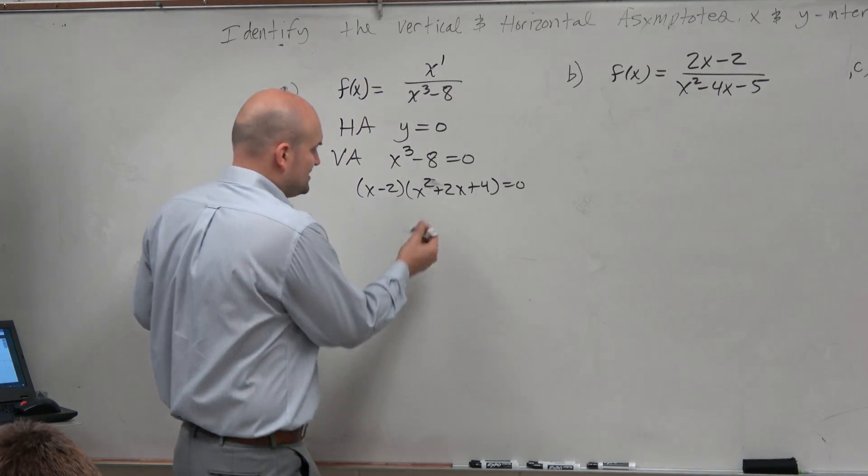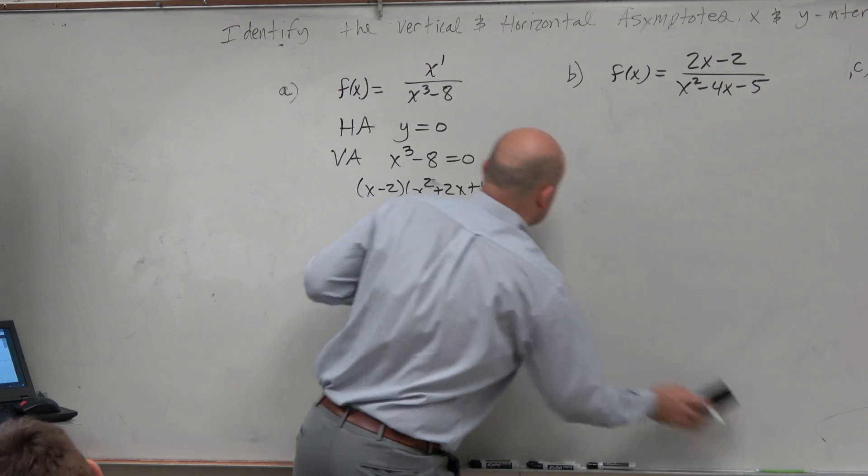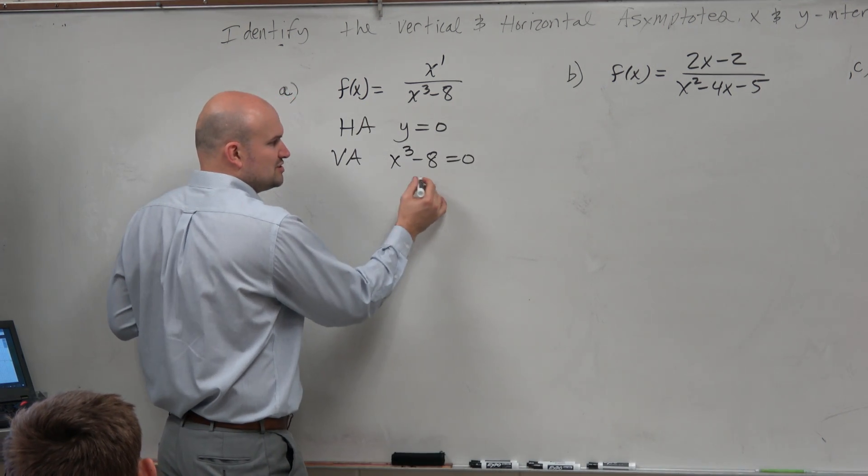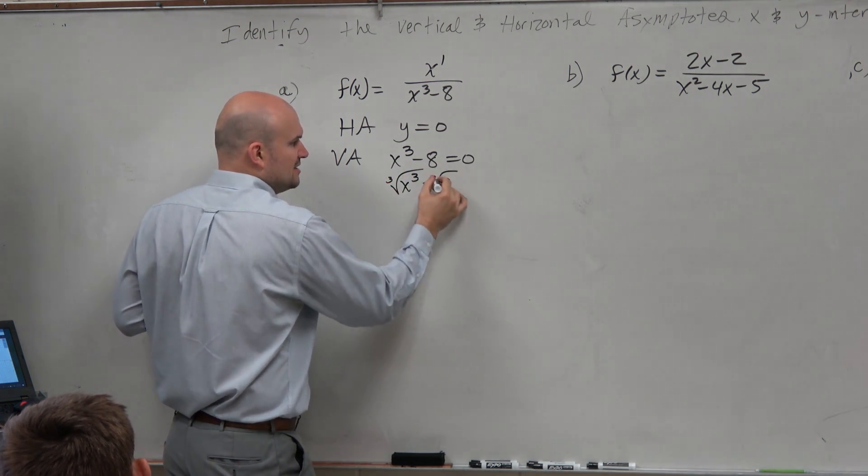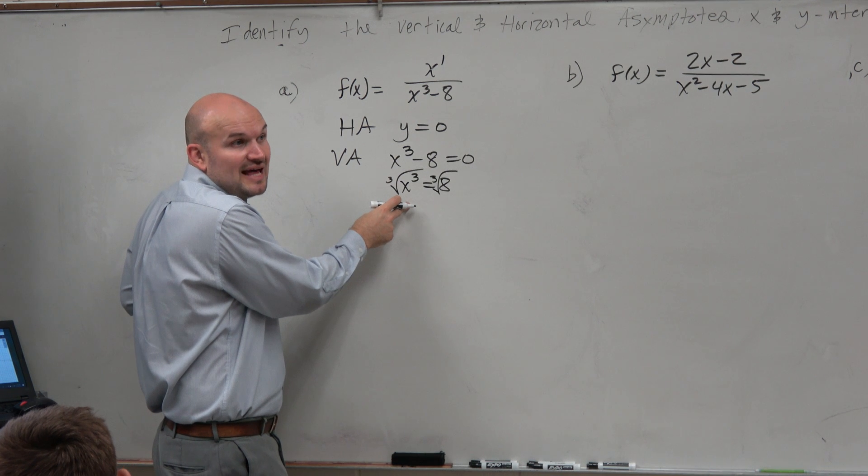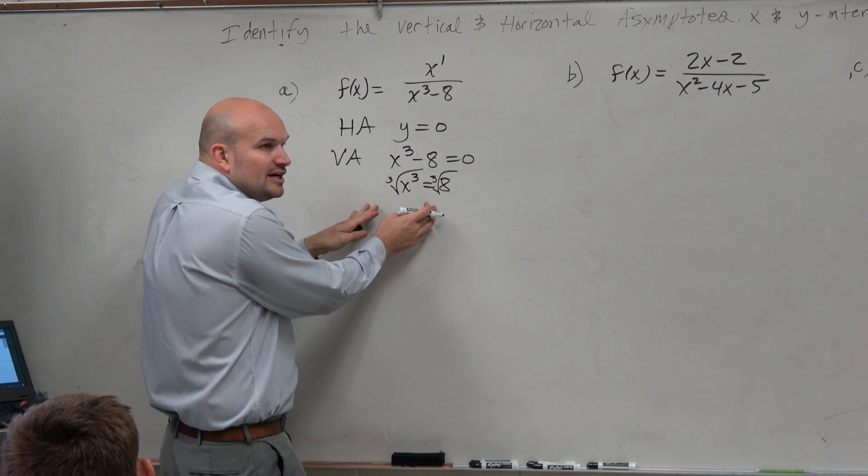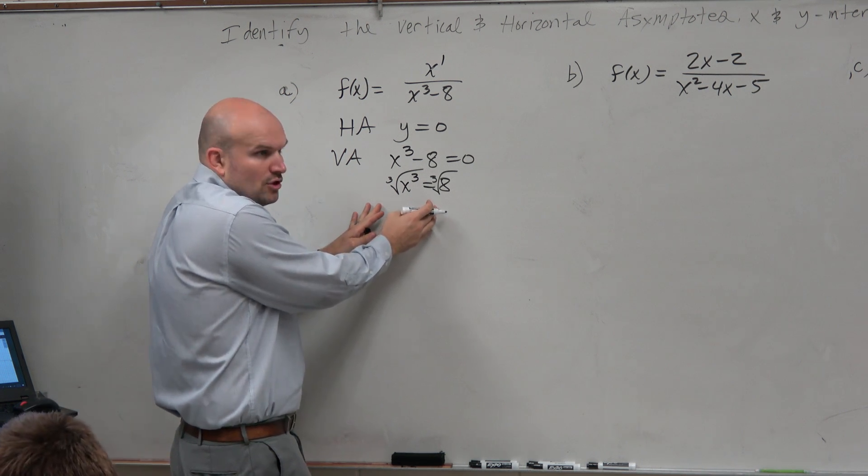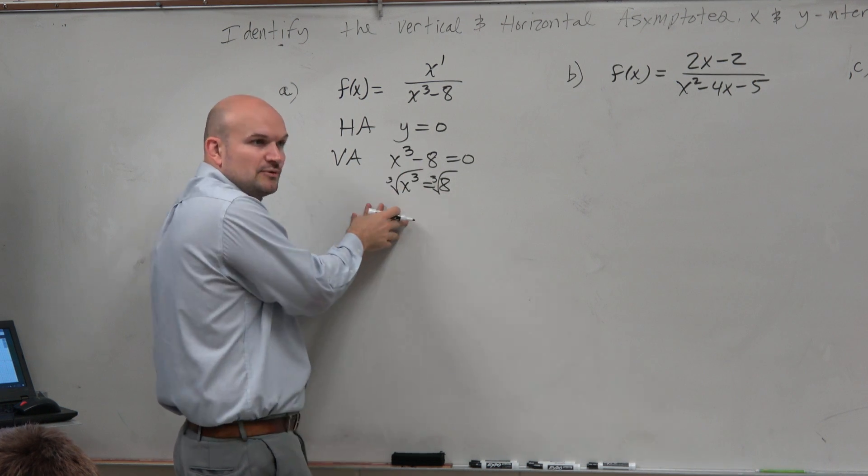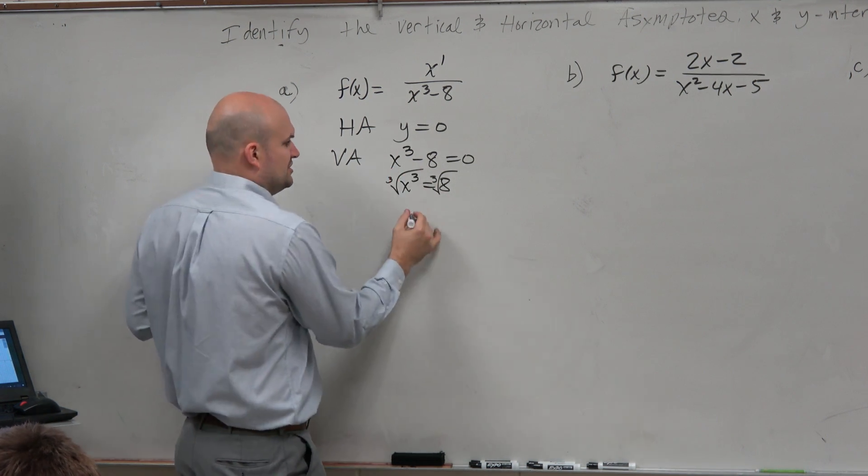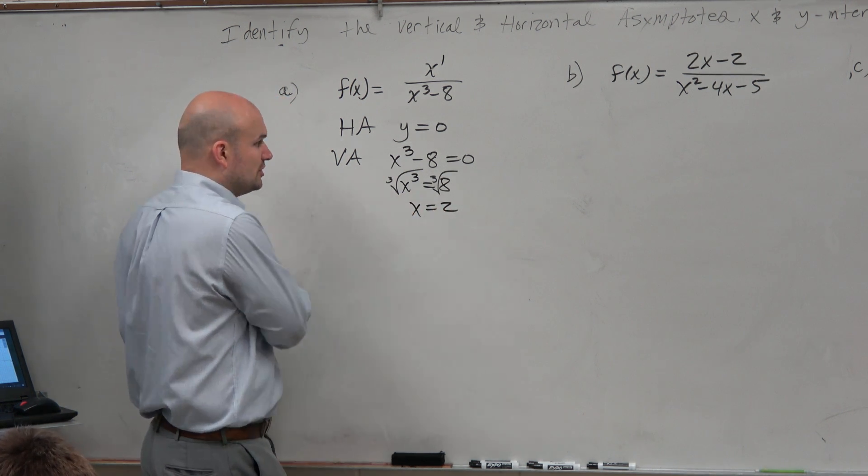So you could see that our real zero is equal to 2. Or, since we're not concerned about our complex iterative, we could also just use the square root or the cube root method. Take the cube root of both sides. I cautioned you not to do this last chapter because we were trying to find all the zeros, real and complex. Here, we're just trying to find the real numbers. So we don't care about the complex. So that's why you can do it this way. Last chapter, that's why we didn't do it this way. Just trying to make a distinction. X equals 2. So there's your vertical asymptote.